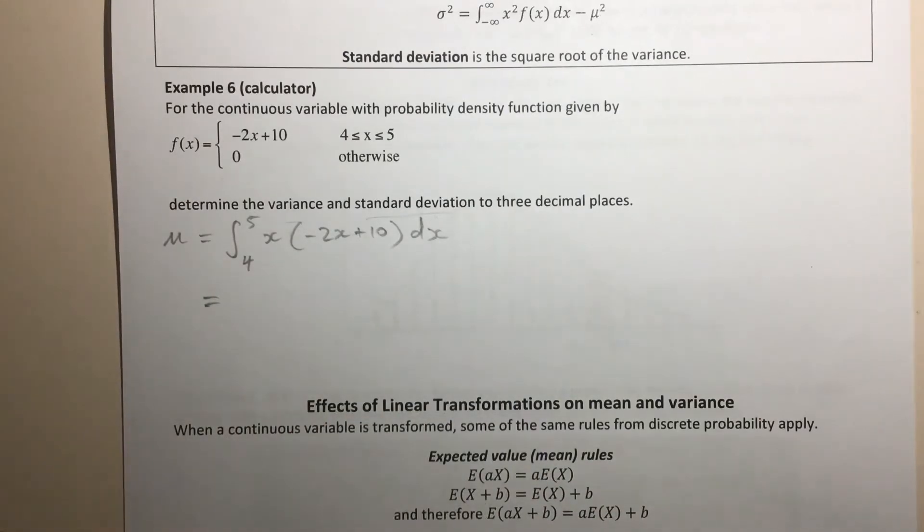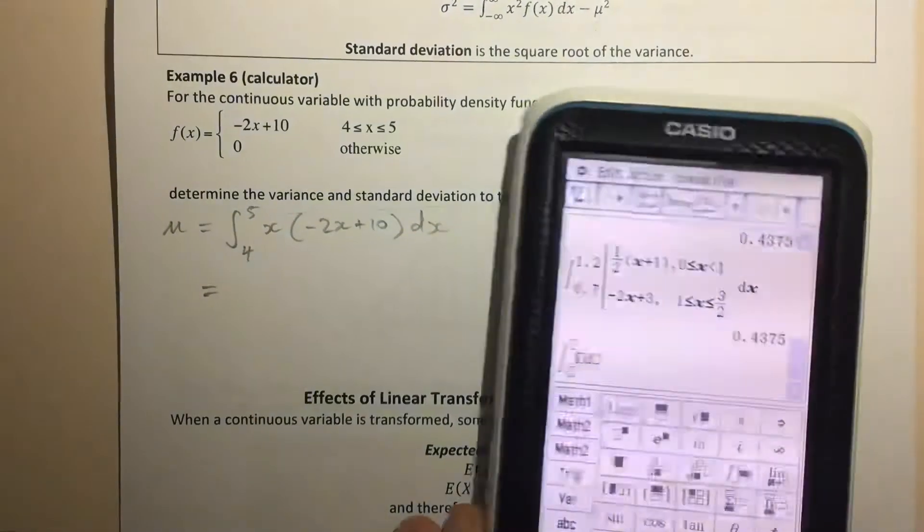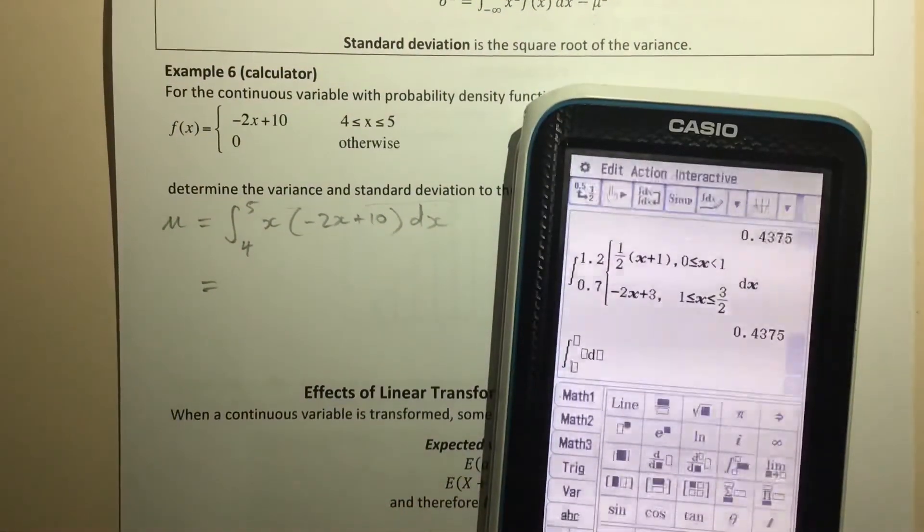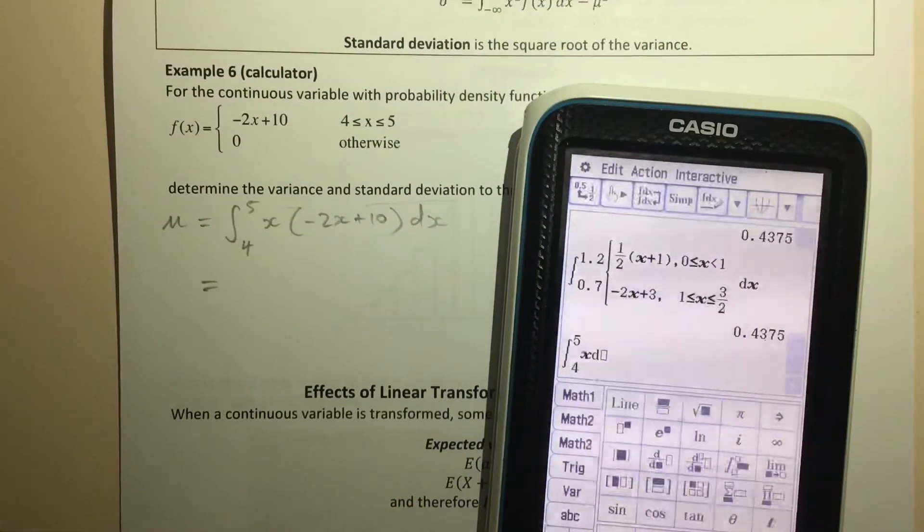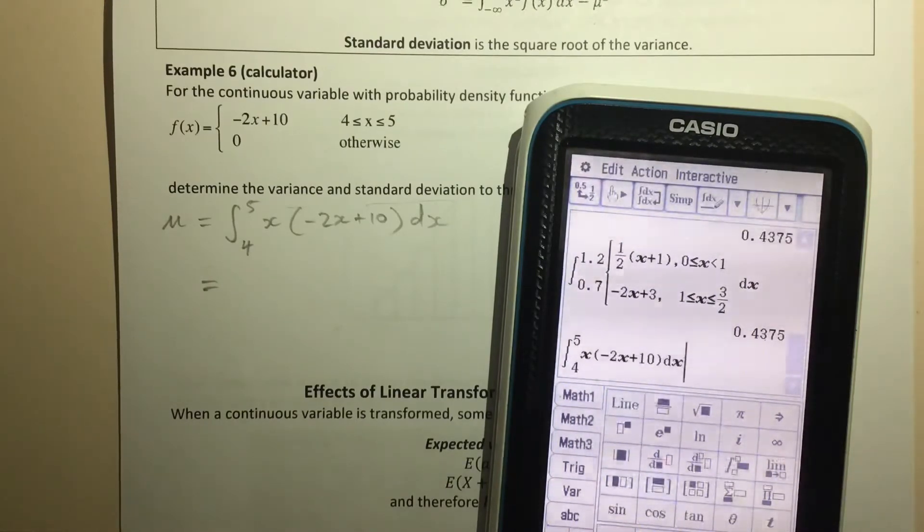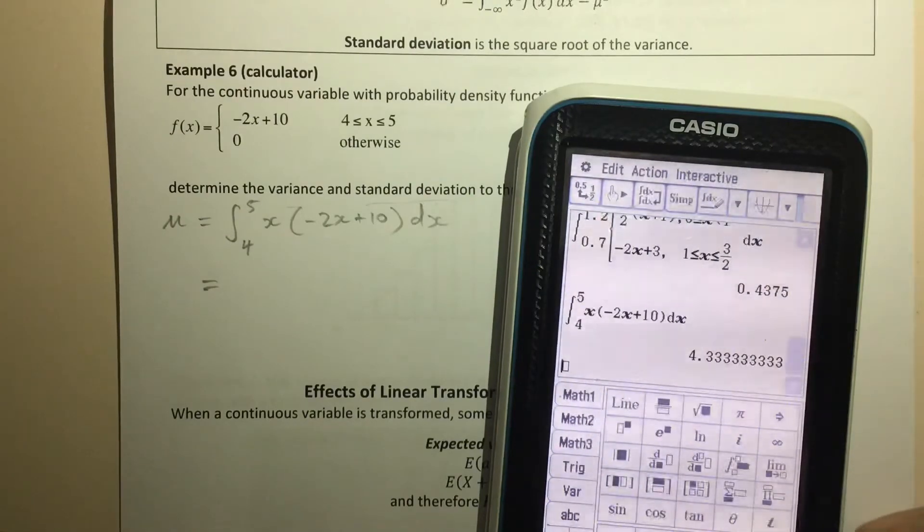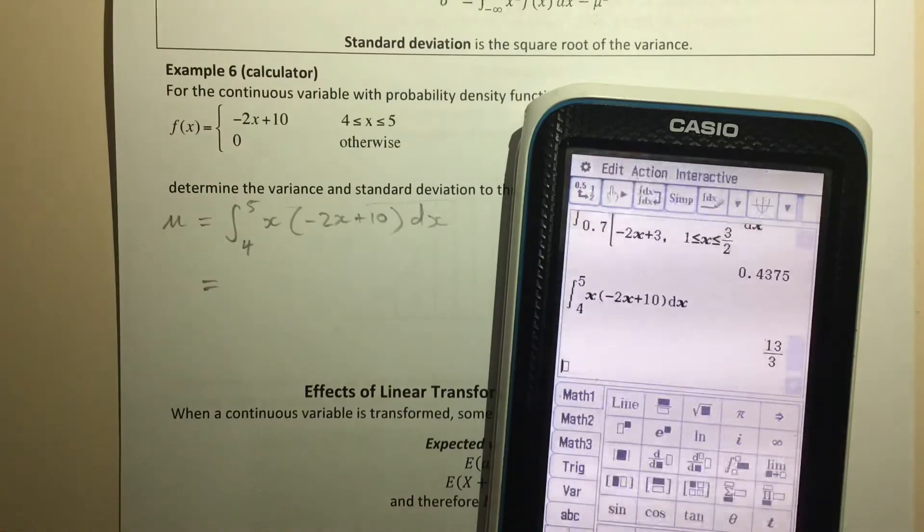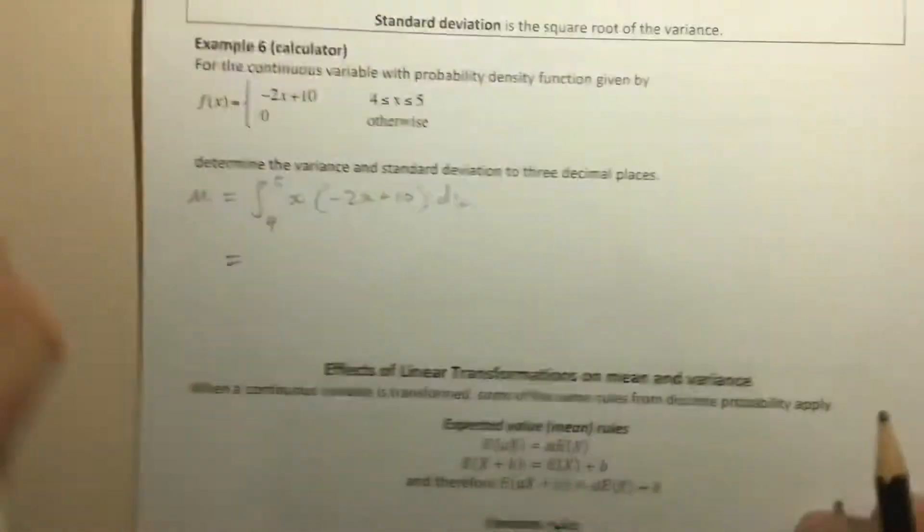I should have typed it in advance to save time, apologies. I'm going to fast forward the next 20 seconds or so. 4, 5, x times -2x + 10 with respect to x. Okay, best to keep that in standard mode so I don't have to round anything off too early. So 13 over 3. Our expected value is 13/3.